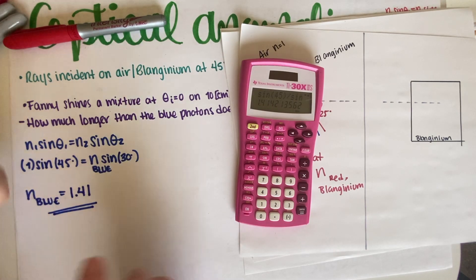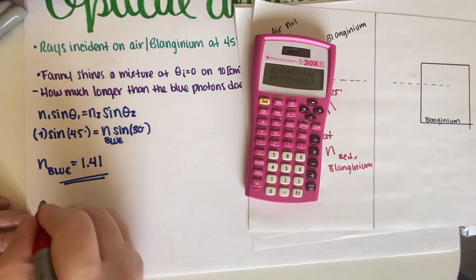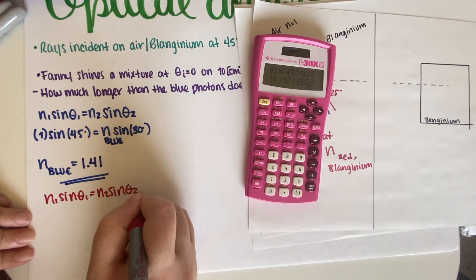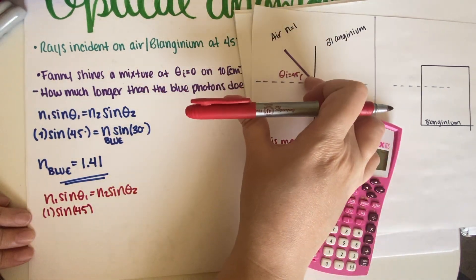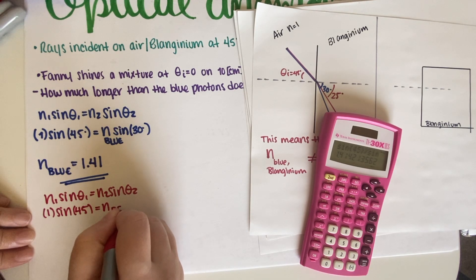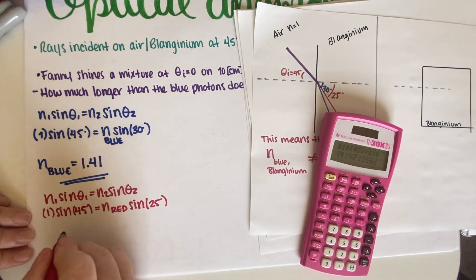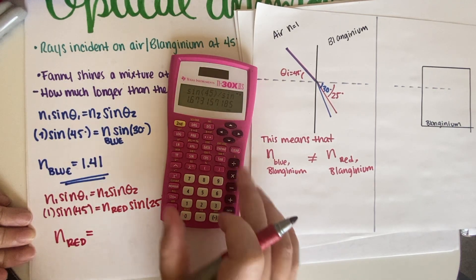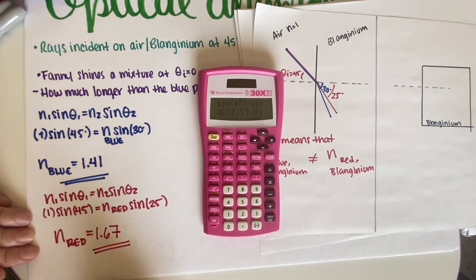Now I'll do the same for red. The left side of Snell's law is the same — same incidence angle, same index of air — but now I use the refraction angle for red, which is 25 degrees. So n_red = sin(45°) / sin(25°), and that equals 1.67. This is the index of refraction for red light in blindgenium.